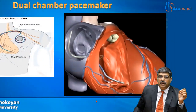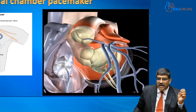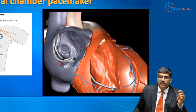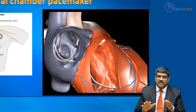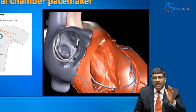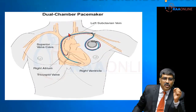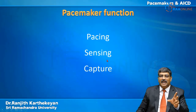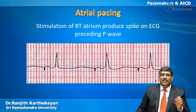Coming to dual chamber pacing, here you have a lead which goes into the right ventricle, another one which goes via the coronary sinus into the left ventricle, and a third lead goes into the right atrium. This gives right atrial and biventricular pacing, similar to a normal conduction system — this type of pacing is usually used in heart failure. In dual chamber pacing, you have one lead in the right atrium and another lead in the right ventricle, providing right atrium and right ventricle pacing. It sends the cardiac action potential and captures, converting it into a mechanical contraction.